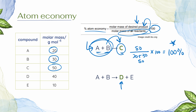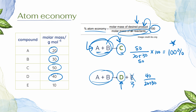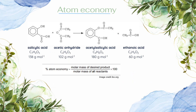What if instead of making C, I want to make D, but this reaction also leads to another product E that we don't want? We calculate the same way: the molar mass of D is 40 g/mol, divided by the masses of all reactants — 20 plus 30 again. Notice that I am not including the molar mass of E because it is not part of my desired product. Times 100: 40 over 50 is 0.8, times 100 is 80%. So only 80% of my reactants' masses ended up in my desired product — 20% of the mass was wasted. Not as great, but still not too bad.